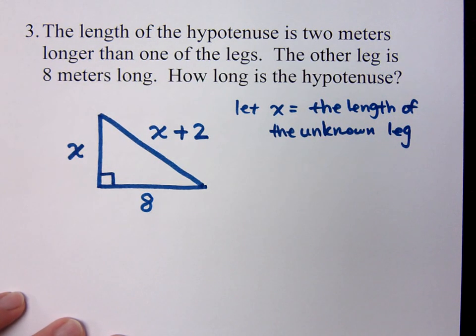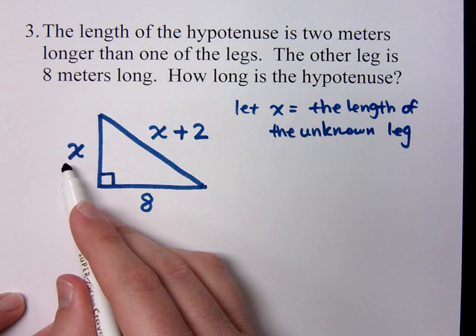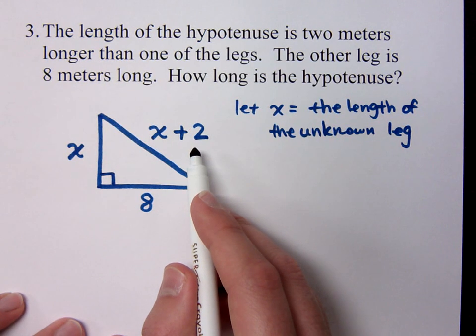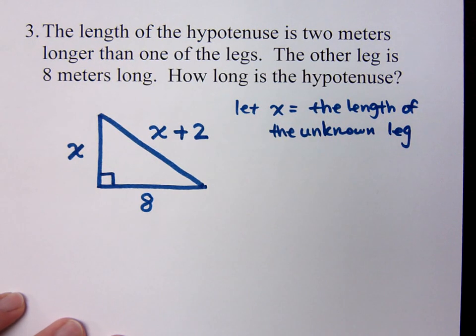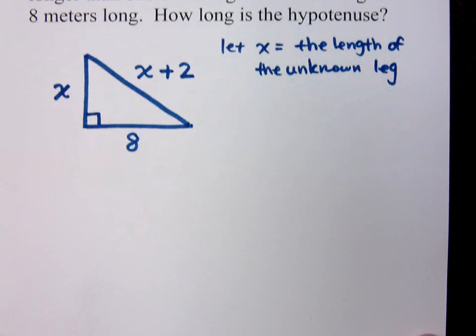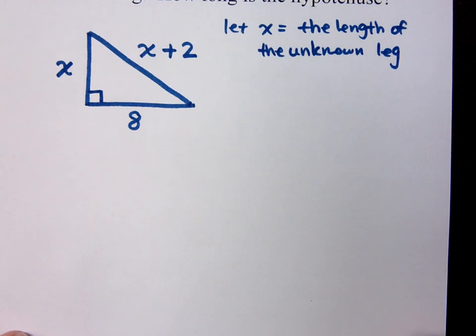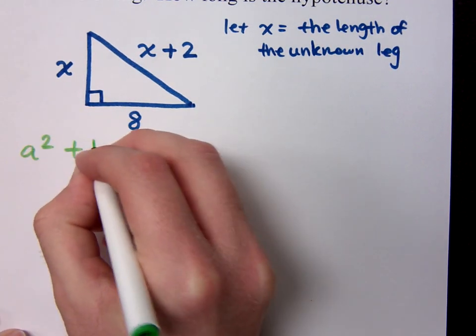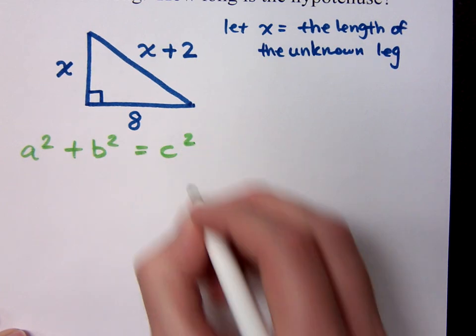Well, we want to know how long is the hypotenuse. So what we're first going to have to do is figure out what is x, and then use that to get my x plus 2. Now, for me to do this, I'm going to have to use the Pythagorean theorem. The Pythagorean theorem sets up like this: a squared plus b squared equals c squared.